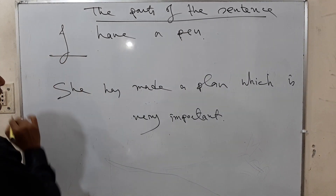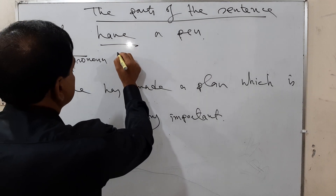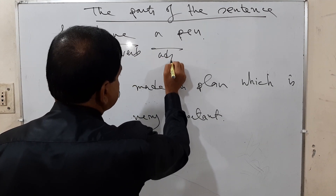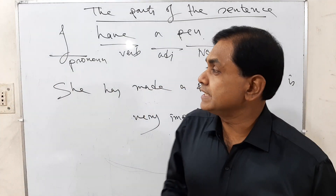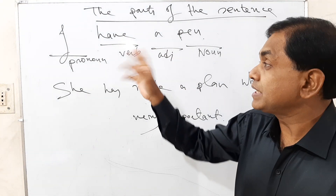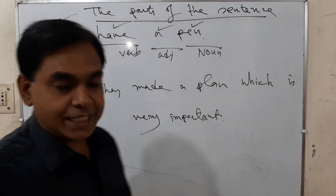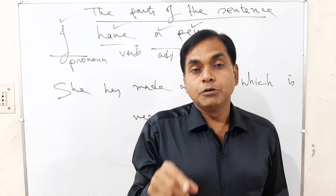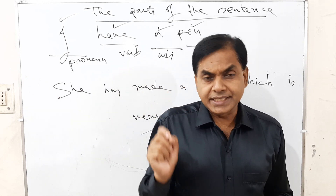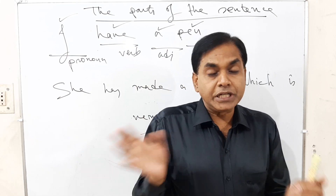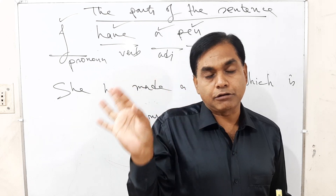If we want to build a building, we need a lot of things. The first one is that we have to create the foundation very strong. We need sand, brick, rod, cement, and finally manpower, which is very important. In this way, a sentence has many kinds of parts and all the parts are equally important. All the parts create a sentence. Now, in 'I have a pen' — 'I' is a word, it is a pronoun; 'have' is a verb; 'a' is an adjective; 'pen' is a noun. So it is a sentence formed with four parts. And all the words are called parts of speech.